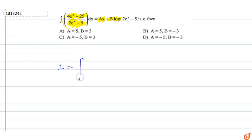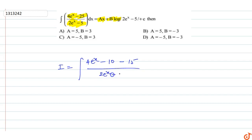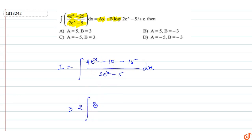The integral I is equal to (4eˣ - 10 + 15) upon (2eˣ - 5) dx. We break down the numerator: 2 into (2eˣ - 5) plus 15, writing it as 2 into (2eˣ - 5) over (2eˣ - 5) plus 15 over (2eˣ - 5).